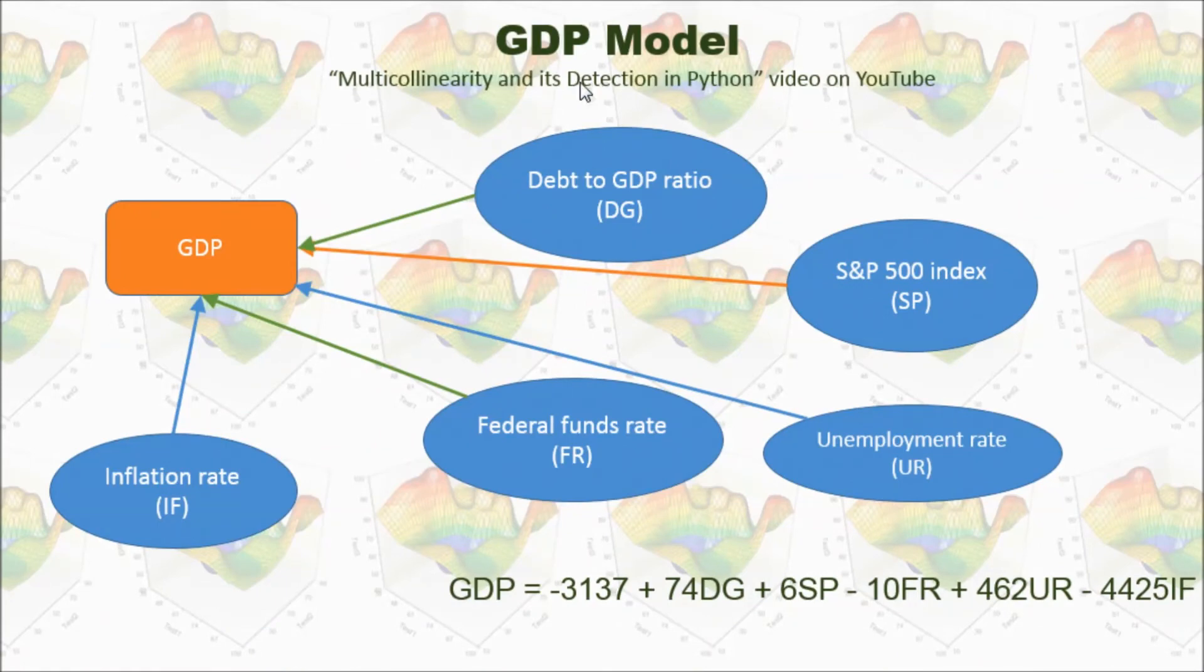In my previous video with title, multicollinearity and its detection in Python, I built a GDP model. You are welcome to watch that video. In this GDP model, I use GDP as dependent variable, and use those independent variables to forecast the GDP, and this is the result I got from this model.